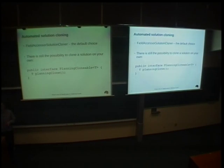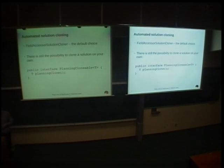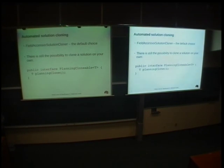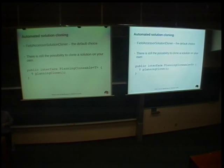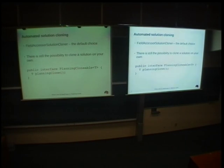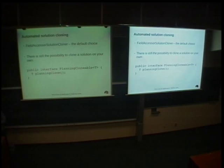It would be nice if Optaplanner could clone the solution itself. Yes, big surprise, it can. By default, it uses the field accessor solution cloner, which clones your solution using Java reflection, and you don't need to worry about solution cloning anymore. Of course, if you want to, there is still the possibility to clone a solution on your own — just implement this interface, PlanningClonable, and this method, and Optaplanner will use your code instead of the built-in field accessor solution cloner.